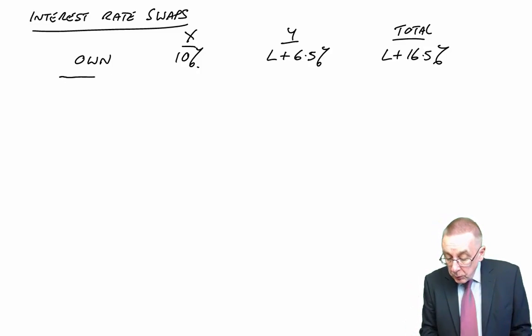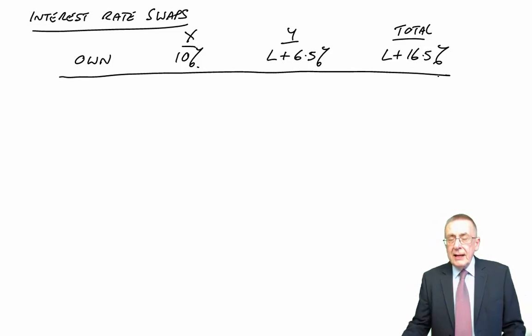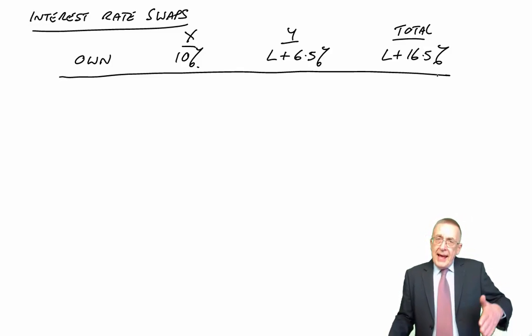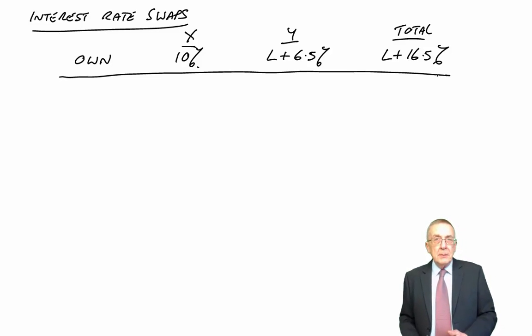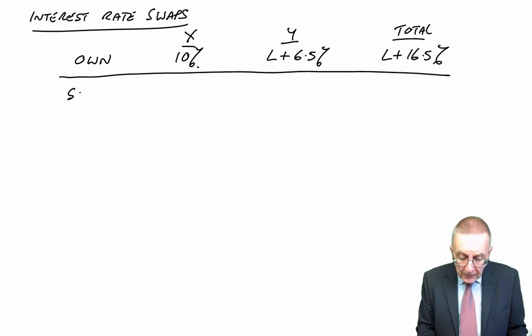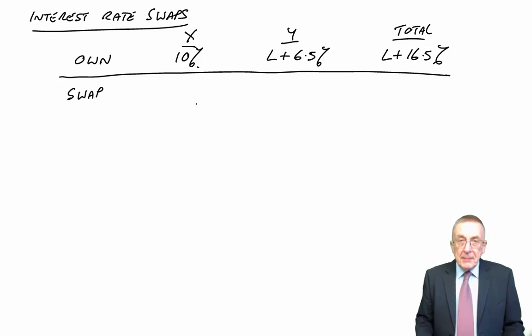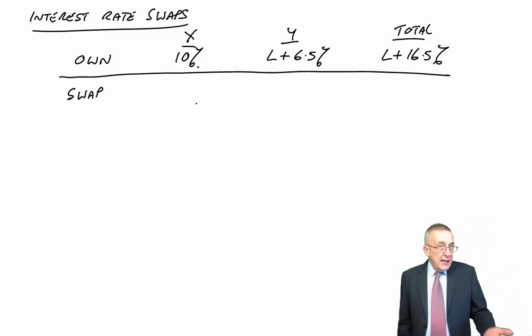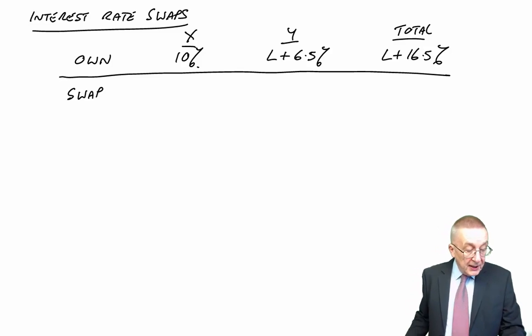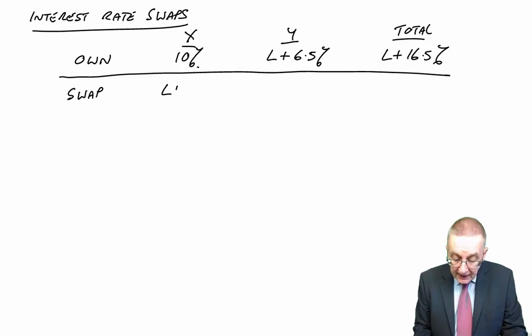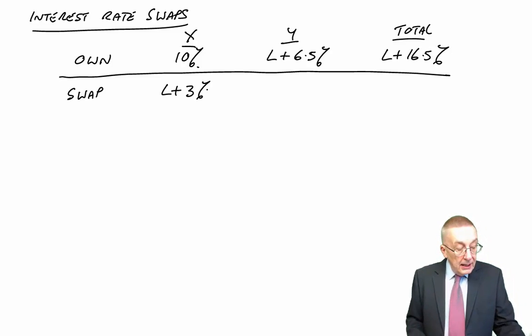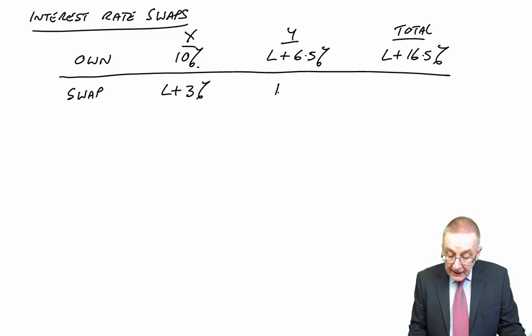Well, essentially, what swap borrowing involves is instead of X borrowing fixed, which is what they want, and Y borrowing LIBOR floating, which is what they want, suppose they borrow the opposite. X, instead of borrowing fixed for the moment, suppose they took out a loan at floating. They'd have to pay LIBOR plus 3%. Y, although they want floating, suppose instead they borrowed at fixed, they'd pay 12%.